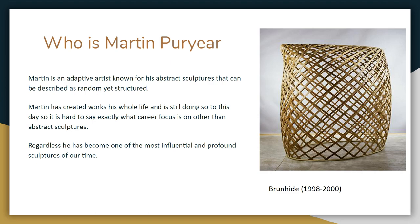Martin Poirier is an adaptive artist who is most predominantly known for his large-scale sculptures that utilize woodworking and abstraction into a precisely distinct aesthetic. Although he is known for these works, I think the real common trend for his works can be described as random, yet structured.